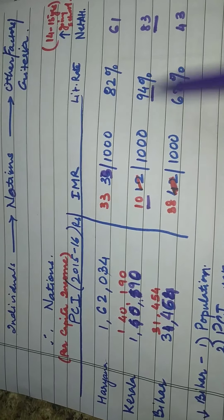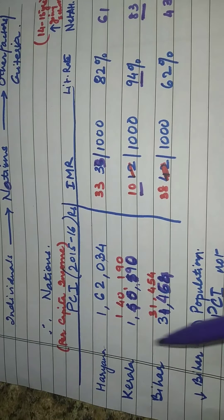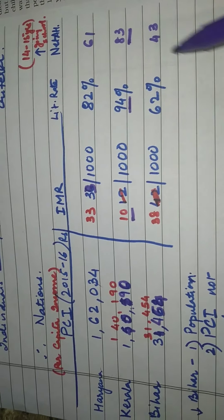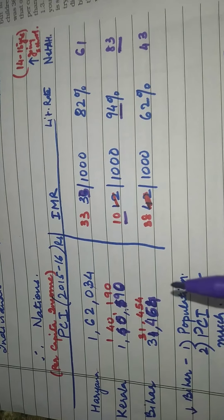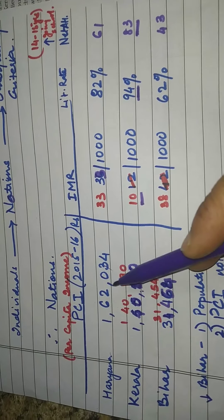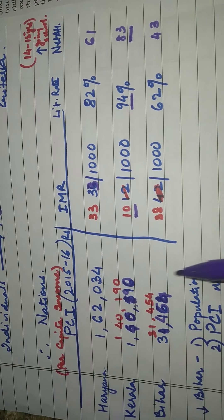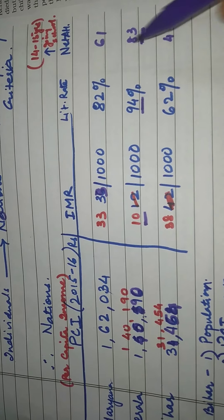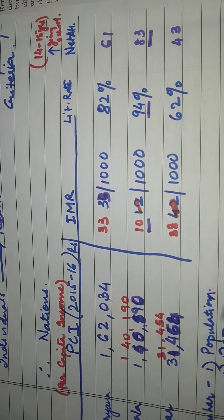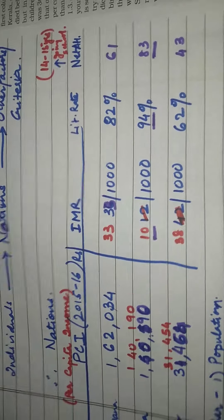So this tells us that Kerala is better developed than Haryana, and Bihar is the least developed among these three states. This is a very important question and it comes almost every year in some form or other. What you have to do is literally learn this table and be able to explain everything I explained to you, so that when the question comes, you are ready. This is a very easy question — the only thing you have to do is learn it up.